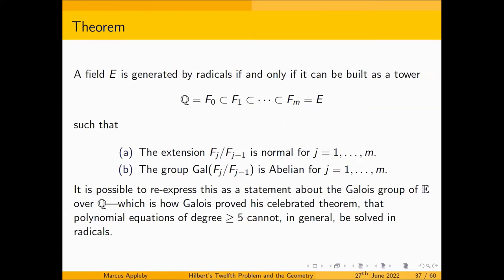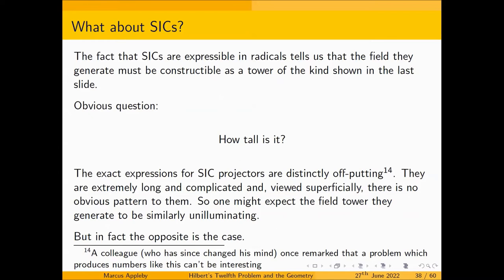By a fundamental theorem essentially proved by Galois — he didn't use the language of fields, but that's what it comes to — a field is generated by radicals if and only if it can be built as a tower: starting from F₀, the rationals, ending with F_M, the field of interest, with a sequence of subfields where each successive extension is normal and abelian. This is basically how Galois proved his celebrated theorem that polynomial equations of degree five or higher cannot in general be solved in radicals. The fact that SICs are expressible in radicals tells us the field they generate must be constructible as a tower of that kind. The obvious question is: how big is the tower? Is there anything systematic you can say about its height?